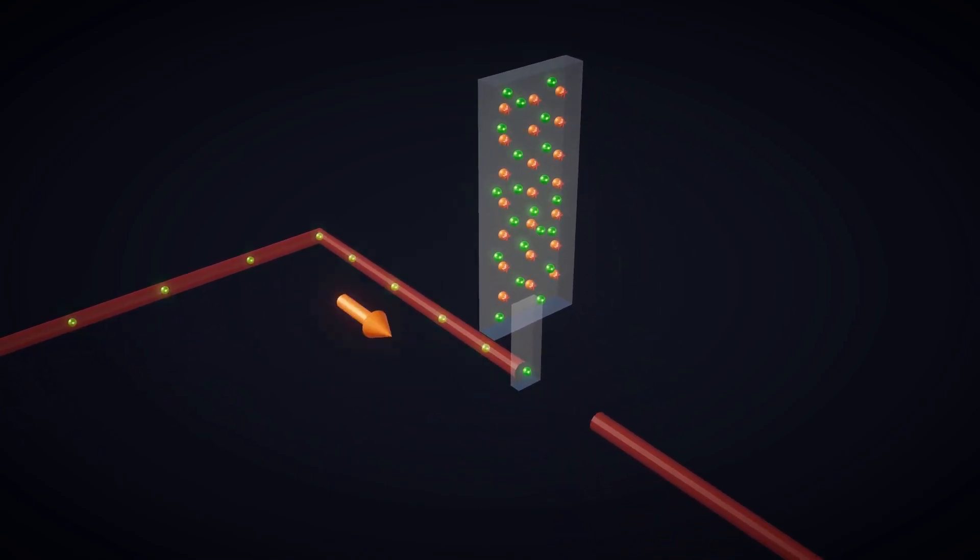Now, if we try to push extra electrons into the metallic plate, we find that it is not possible. This is because particles with the same charge repel each other. Whenever an extra electron tries to enter the metal plate, the electrons in the metal plate repel it.